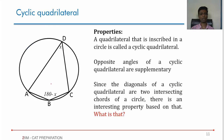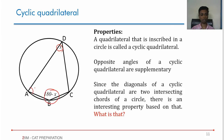Cyclic quadrilateral — one very important property: opposite angles of a cyclic quadrilateral are supplementary. If one angle is X, the opposite is 180 minus X; if another is Y, the opposite is 180 minus Y. This was already established and proved when we covered circles.